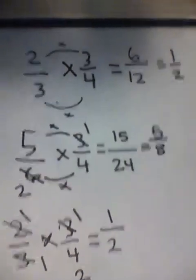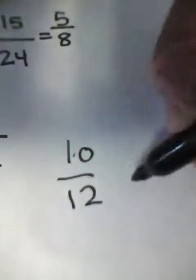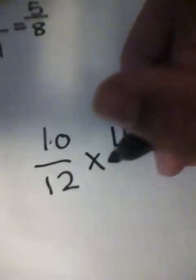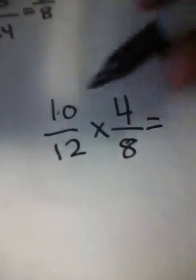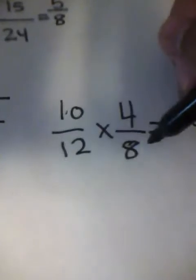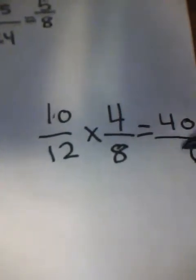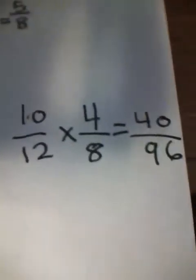Multiplication is pretty easy. I'll do one more — if you don't want to see this part you can skip ahead to the division part. So say you have a harder one: 10 over 12 times 4 over 8. You multiply the numerators: 10 times 4 equals 40. Then the denominators: 12 times 8 equals 96. That's your answer and you can simplify it.